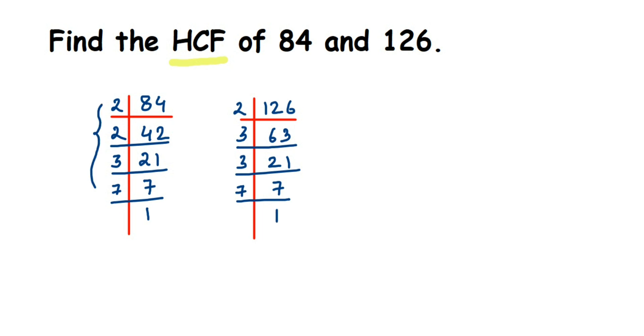Now once we have done this, we will just rewrite it once again. I got the factors of 84 and 126, so let me just rewrite it. 84 is equal to 2 times 2 times 3 times 7. Similarly, 126 is equal to 2 times 3 times 3 times 7.